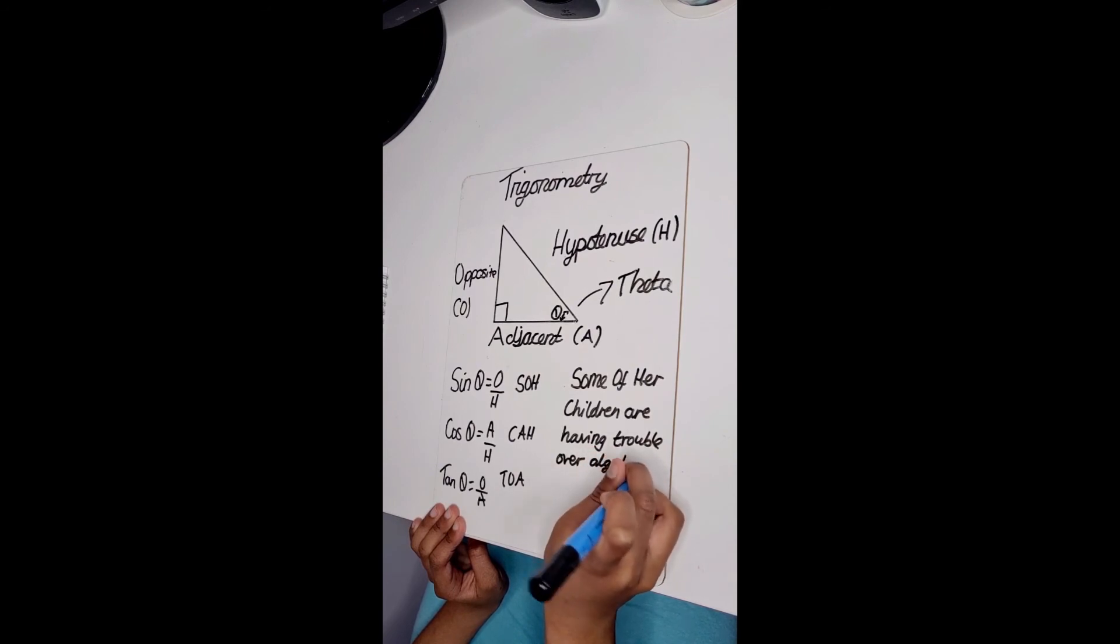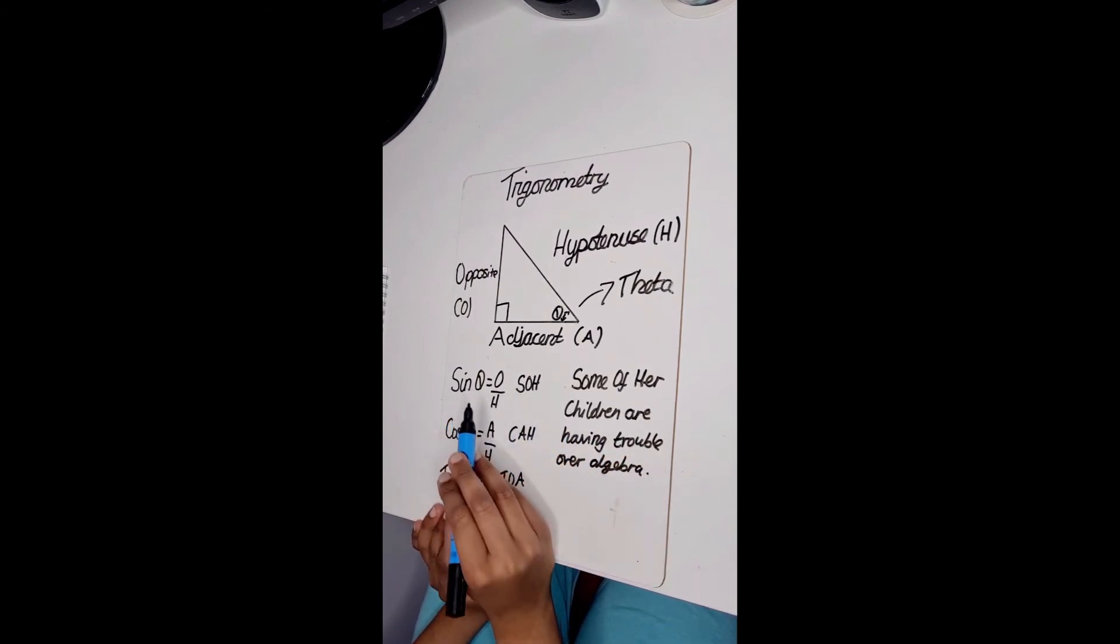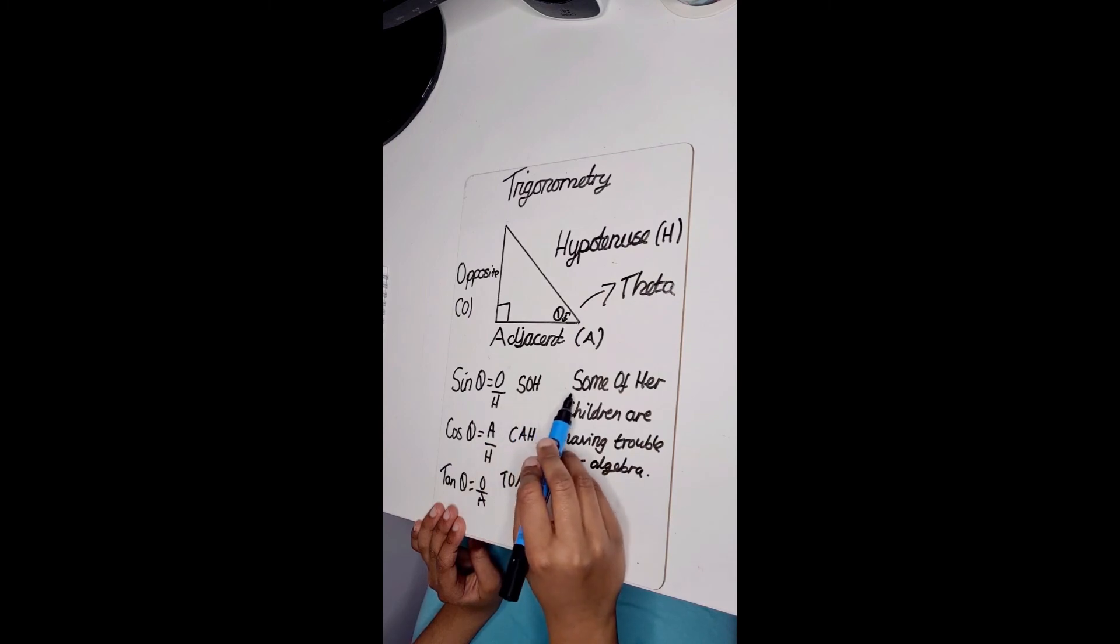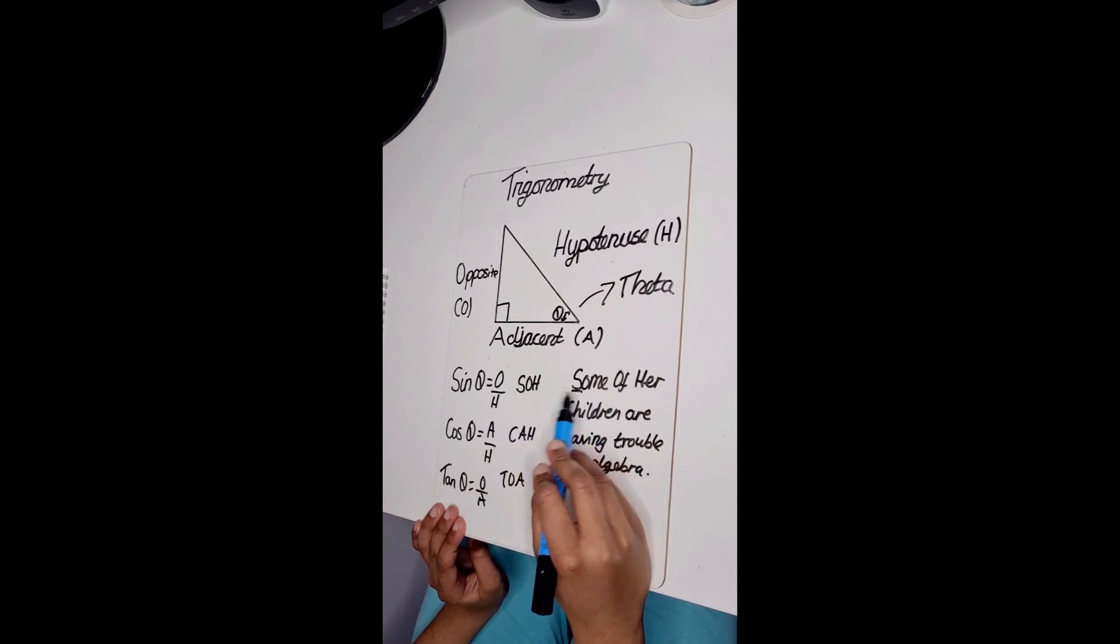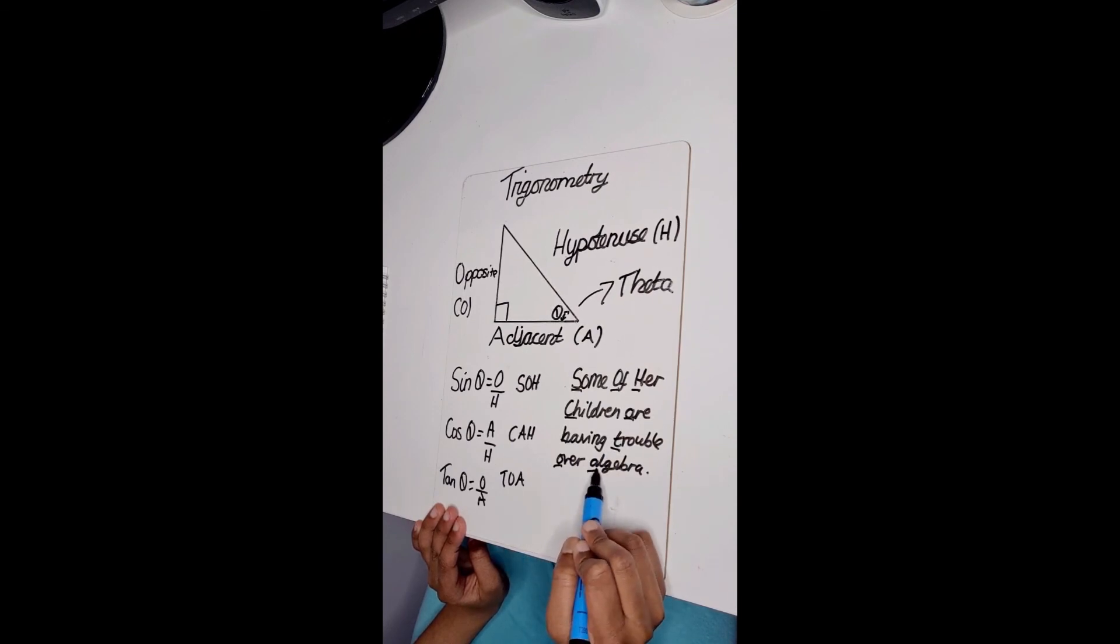So, basically this means for sine theta, it's opposite over hypotenuse. Cos theta equals adjacent over hypotenuse. And tan theta is opposite over adjacent.